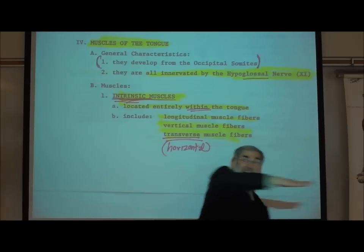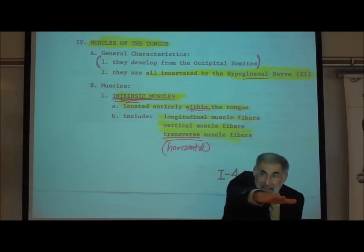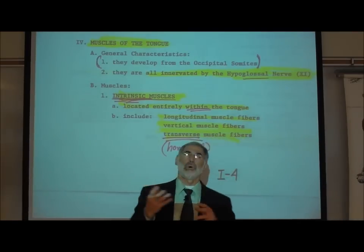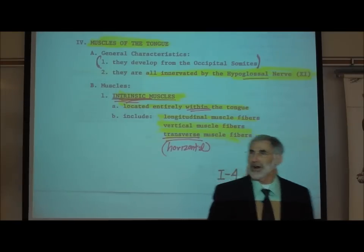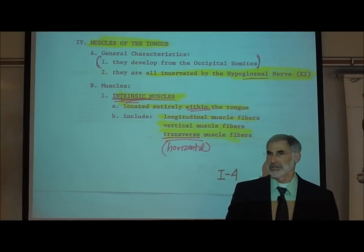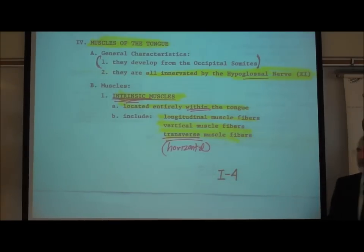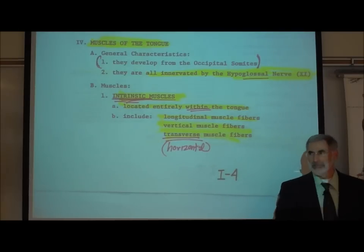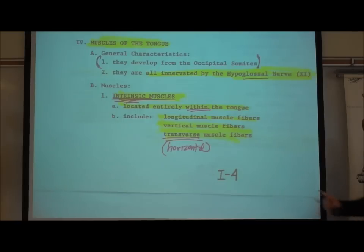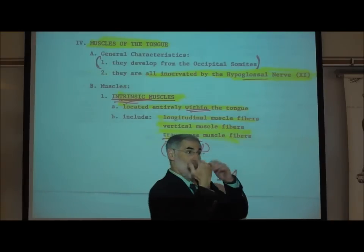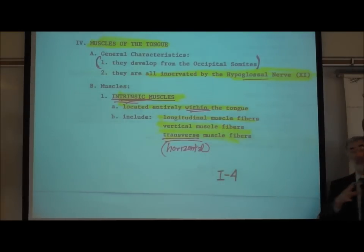Therefore, the tongue muscles allow us to move our tongue in more different ways than any other muscular structure in our body. Many people can roll their tongues into a U shape, roll it under or over. Whether one can do all the different movements is partly genetically determined.